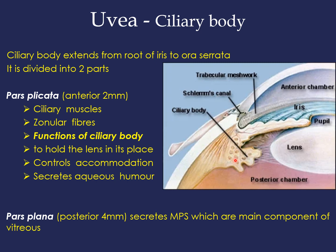The ciliary stroma is a highly vascular structure that regulates aqueous production. The ciliary epithelium — specifically the non-pigmented epithelium — is responsible for secretion of aqueous humor into the posterior chamber. The pars plana, the posterior 4 mm of the ciliary body, secretes mucopolysaccharides, which are the main component of the vitreous fluid.